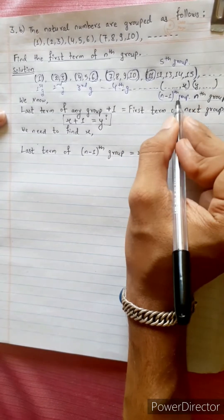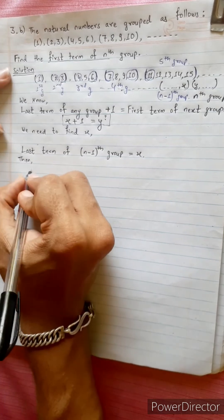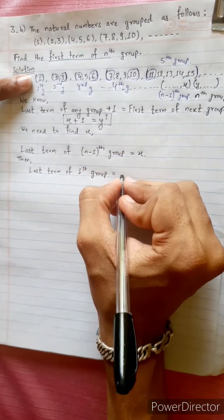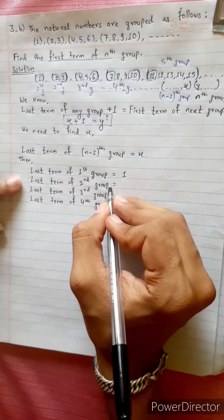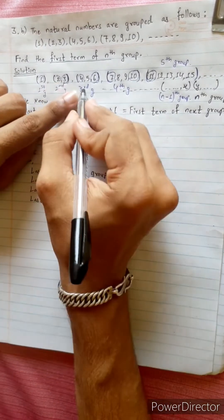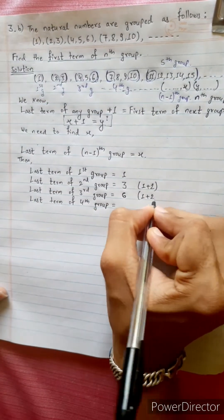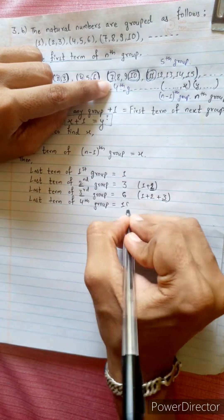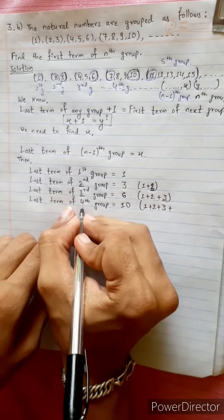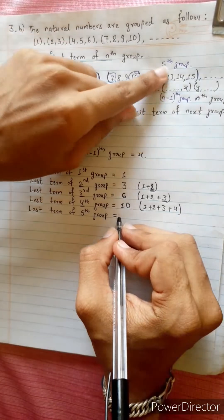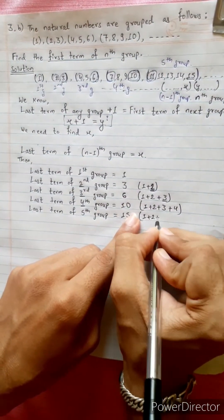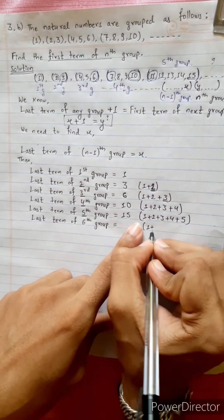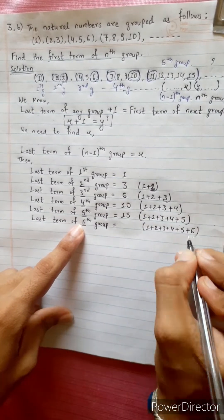This is the last term of the n-1 group. This is the last term of the n-2 group. This is 5. How do you find this group? You can find this group: 1 plus 2 plus 3 plus 4 plus 5 plus 6.